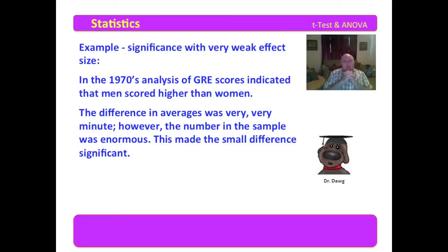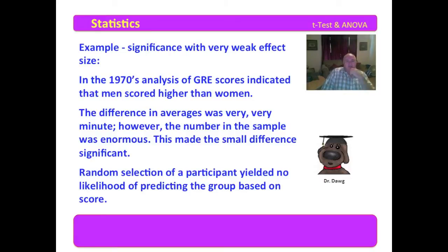So this made that small difference significant. You remember something about the difference being divided by s over the square root of n from your initial statistics. So the more that you had in the sample, the smaller that denominator becomes. And you divide it in, it makes a big z-score. And lo and behold, you've got great significance with that. Well, the fact is, is that the random selection of a participant yielded no likelihood of predicting the group based on the scores. The value was just minutely different. But because the number was so high, it made that little bit of difference significant. Well, in fact, that was a very, very weak effect size, which meant that it really didn't have any meaning. You can have significance and lack any meaning whatsoever in the results that you have.